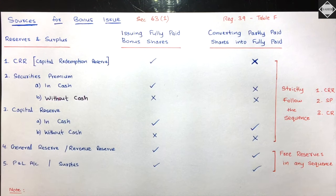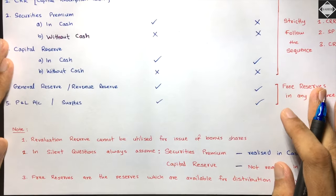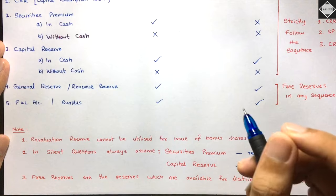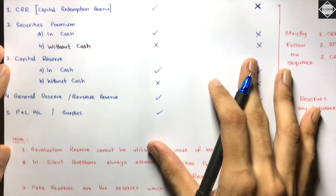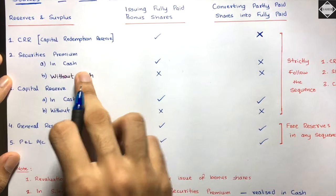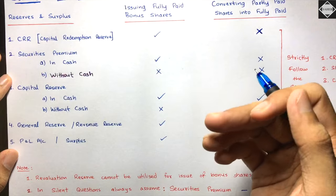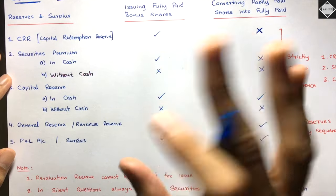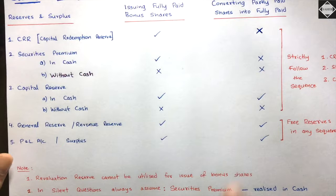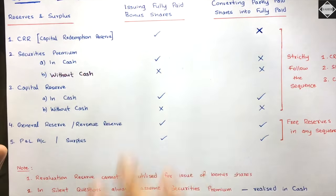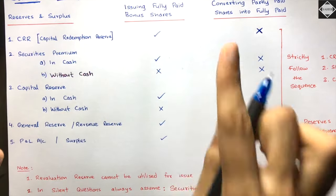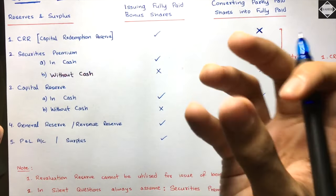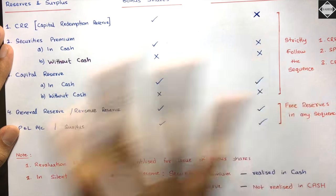For converting partly paid-up shares into fully paid-up (Type 2), per Regulation 39 Table F under Schedule 1, you can only use free reserves and capital reserve realized in cash. CRR is not allowed; Securities Premium is not allowed. The sequence is simpler here - only Capital Reserve (cash) and free reserves.